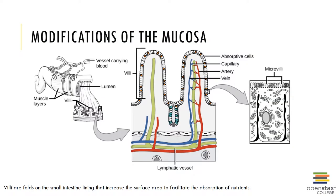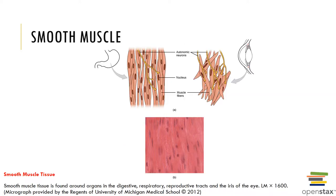Here you can see modifications of the mucosa like the villi, which are folds in the small intestine that increase the surface area to facilitate absorption of nutrients. You can also see the smooth muscle tissue found around organs in the digestive, reproductive, and respiratory tracts and in the iris of the eye.